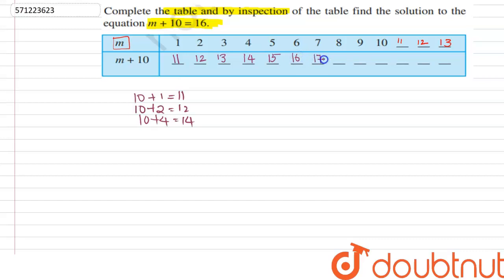Continuing: 10 + 7 = 17, 10 + 8 = 18, 10 + 9 = 19, 10 + 10 = 20, 10 + 11 = 21, 10 + 12 = 22, and 10 + 13 = 23.